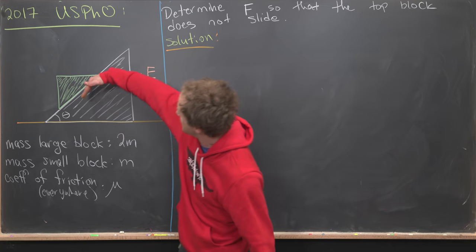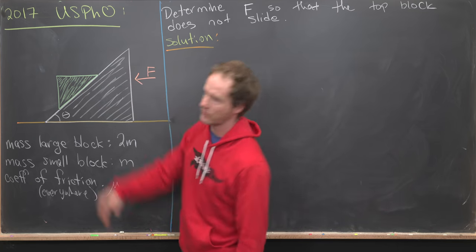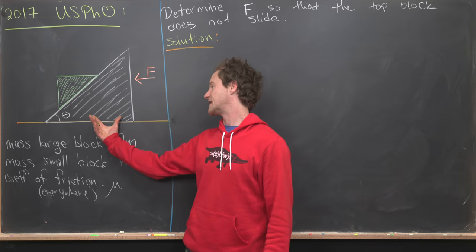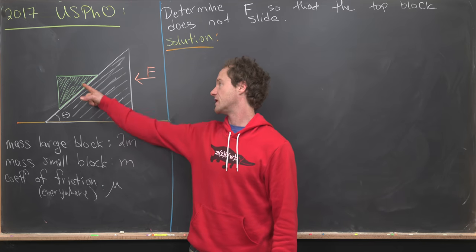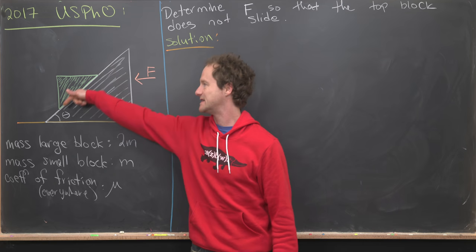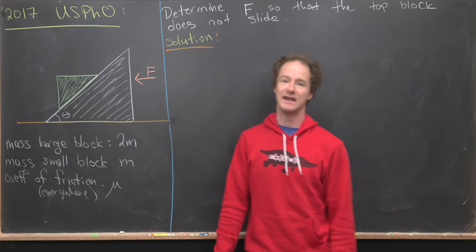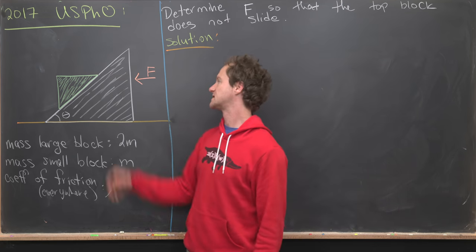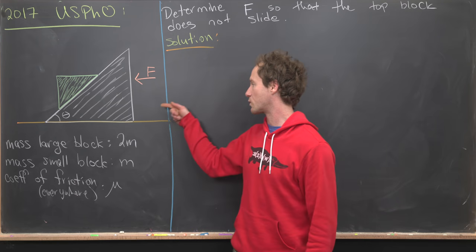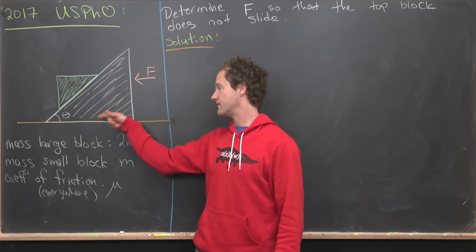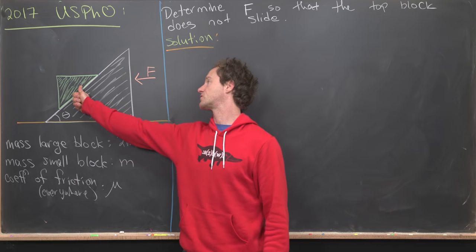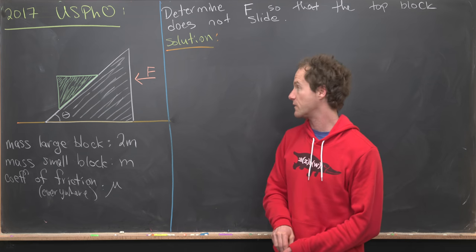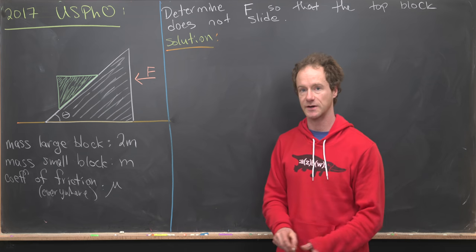Our goal is to determine the range of forces that can be applied that keep this green block from sliding. If this is slippery enough and everything is stationary, the green block will tend to slide down. And if we're pushing very hard to the left, the green block would tend to slide up. So we'll have to look at both of those cases.